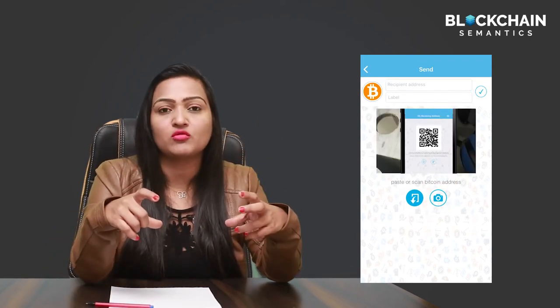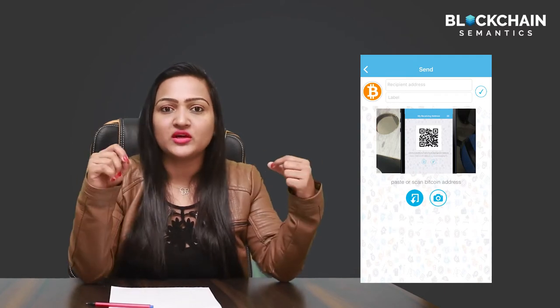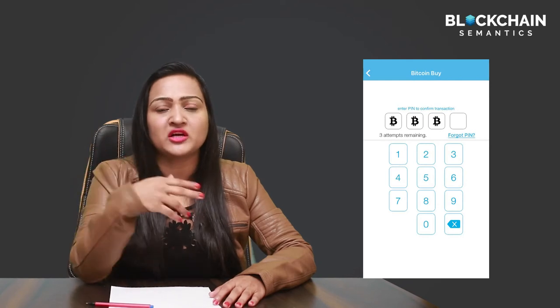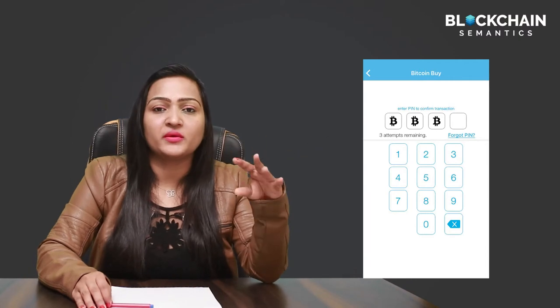Now go to the hot wallet you use — say Zappay. Hit Send on the home page. It'll ask for the address; you can type in your cold storage address or scan the QR code from your printout. Once it has the address, it'll ask how many bitcoins to send — type that in and hit Send. It will ask for your PIN or 2FA. The app will then put in your private key itself because it already has it. Your Bitcoin will go to your cold storage, where it will stay safely — no exchange has access to it, no hacker has it.